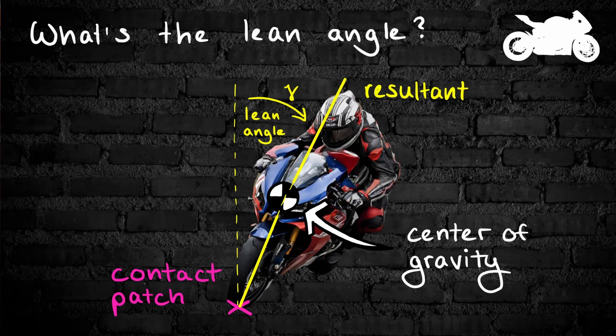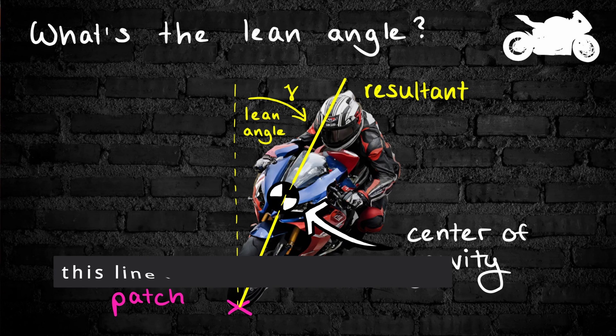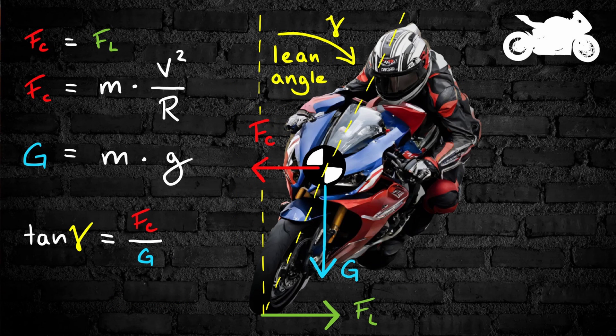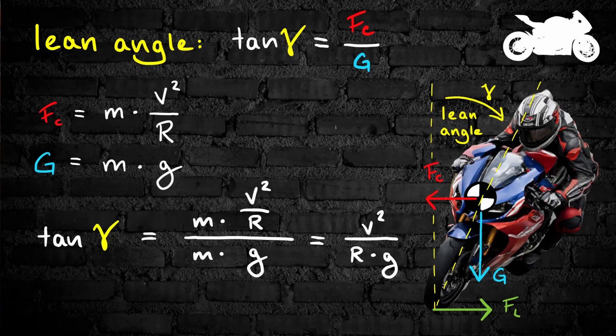Let's come back to the calculation. First, let's define the lean angle. It's the angle between the vertical line originating in the middle of the contact patch between the road and the tire, and the line which goes through the contact patch but also through the center of gravity of the motorcycle. As stated before, the lateral force and the centrifugal force have the same amount in a stable driving situation. Because of this, the lean angle can be calculated with either the centrifugal force or the lateral force. Since we've got a formula for the centrifugal force, we'll use that one.